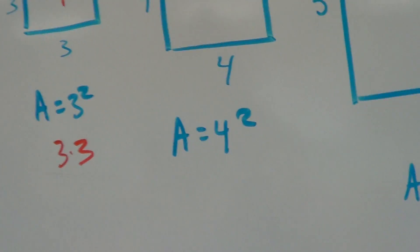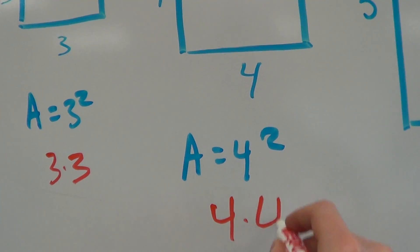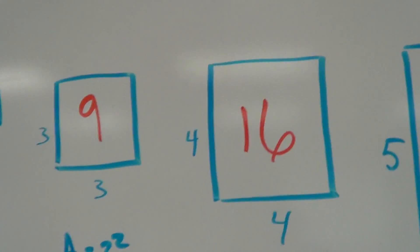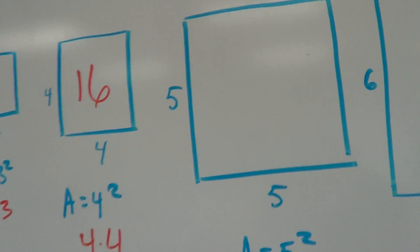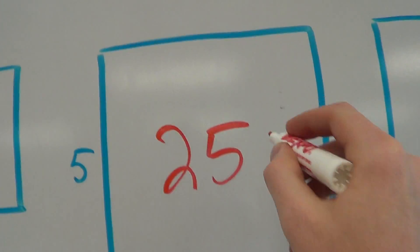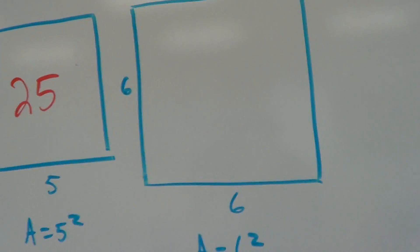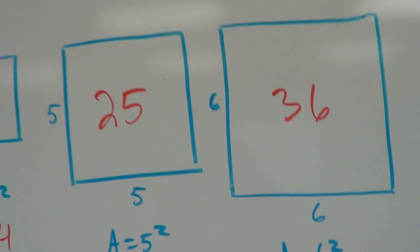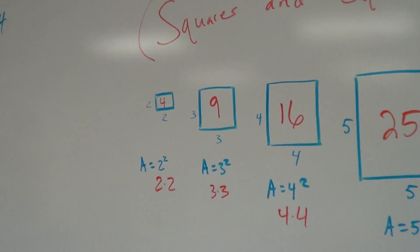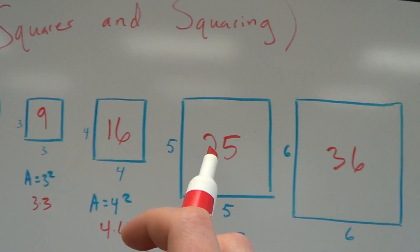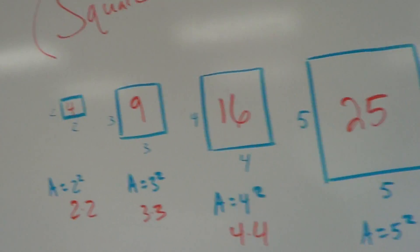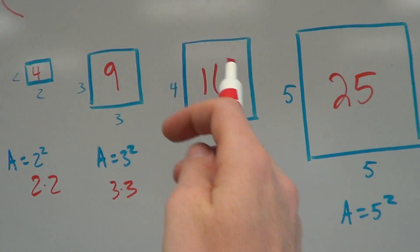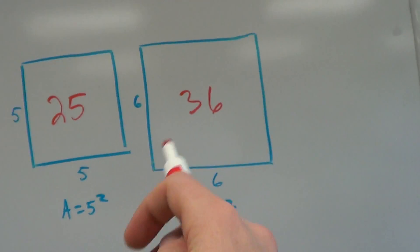4 times 4 is 4 squared, which would be 16 square units. 5 times 5 is 25 square units, so 5 squared is 25. And 6 squared is 36, so that's 36 square units. Now these numbers in red — the 4, the 9, the 16, the 25, the 36 — they're all called perfect squares. It's when I take a whole number like 4 and I square it, or a 5 and I square it, or a 6 and I square it.